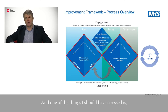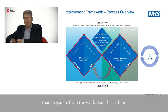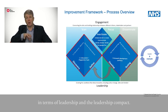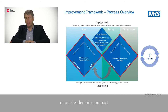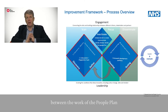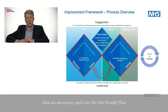As you will know, there is already work being done on the people plan. We don't see ourselves as doing a new thing separate from the work on the people plan — we'll be feeding into the people plan so that when we talk about leadership and the leadership compact, a continual improvement culture should be a central part of that. We would see that we'd have one leadership compact and one leadership dimension that overlaps. This is where we're not putting up boundaries between the work of the people plan and the improvement framework — we'd see it like a Venn diagram where they actually overlap.